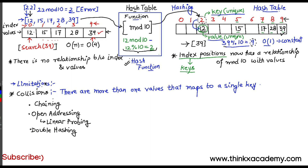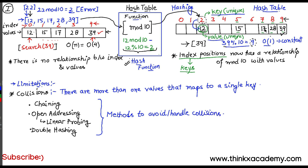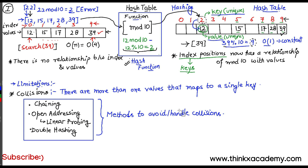This is part one of this whole data structure topic. In part two, we will discuss chaining and all these methods used to handle collisions. Hash table is a very important data structure and you will be using hash tables in many problems. It is basically an optimization over a plain array, and in the next tutorial we will study collisions and how we can handle them.